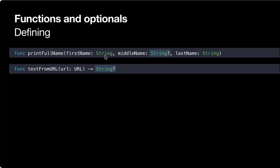Another way: you could have a function that returns nil or a non-nil value. If you want to specify a function that returns an optional, you write the return type with a question mark — for example, func text() -> String?. That means it will return either nil or an actual value.